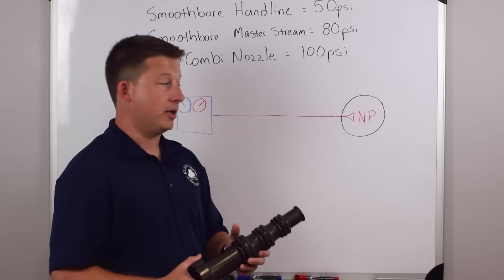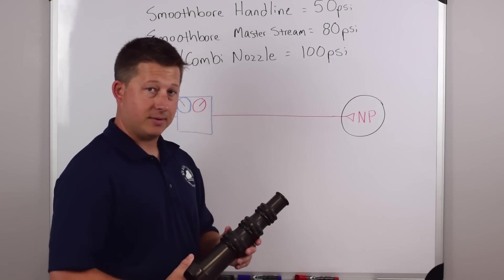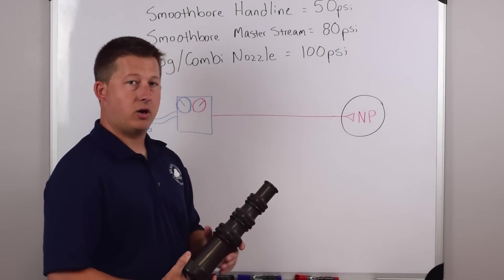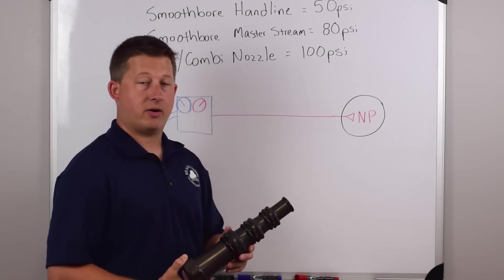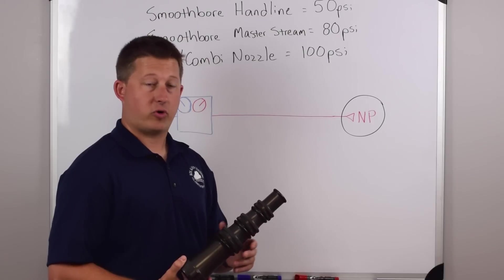So when we go all the way up to a two inch, we're going to be over a thousand gallons per minute at 80 PSI. So this is something you see often on master streams and aerial devices to be able to change your tip sizes to give you different gallonage or different flow for each nozzle tip.